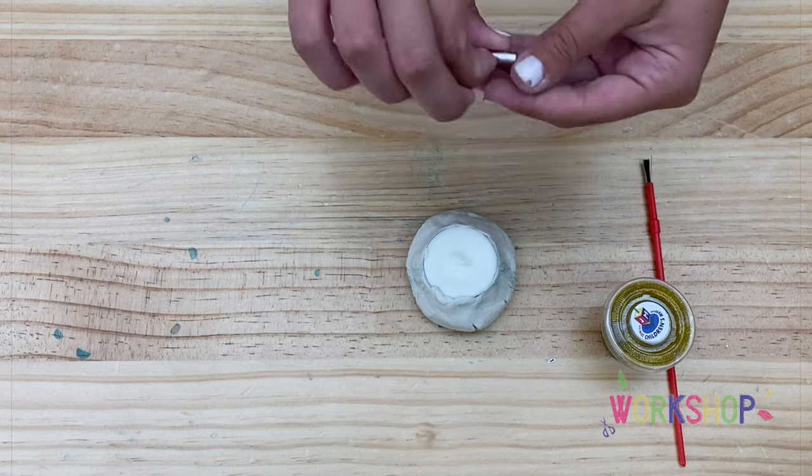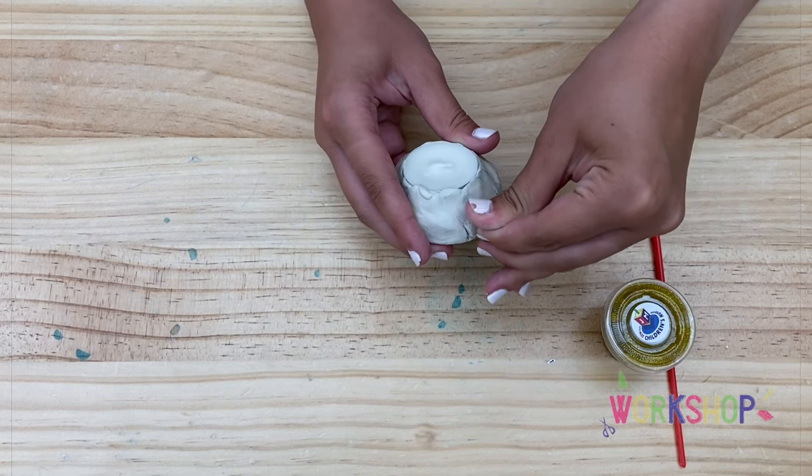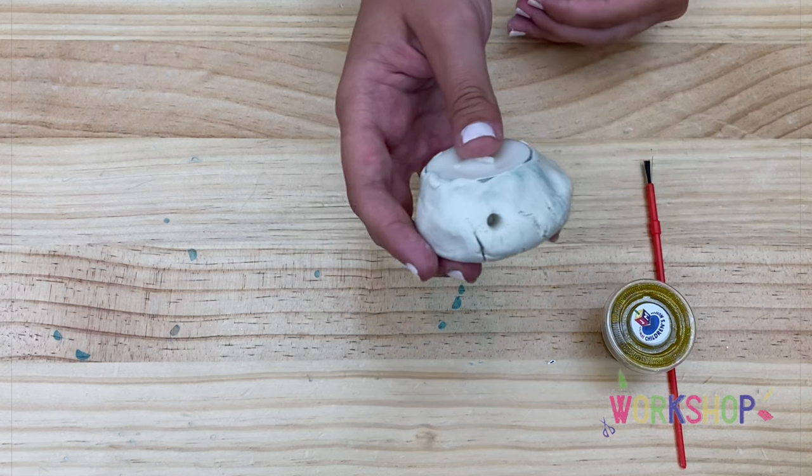Then we will make small holes in the candlestick with the dowel. These holes are for decoration purposes, so you can make as many or as few holes as you'd like.